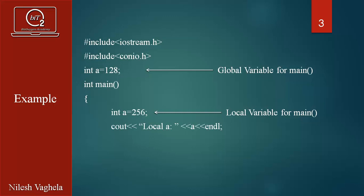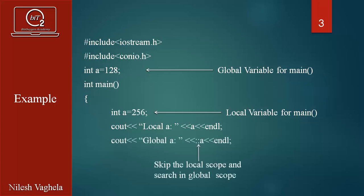Over here, I have printed local A, so it will go into the local scope and print that particular value. When I write global A with Scope Resolution, it skips the local scope and searches in the global scope. Then we have getch and return 0. If we compile this particular program and run it, we will get the output like this.